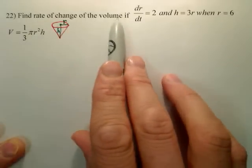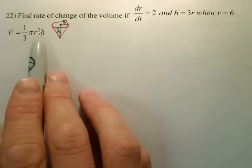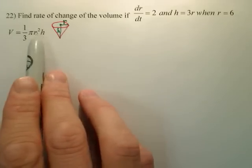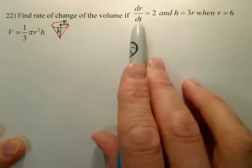This is another way of saying dV/dt. So I need to derive this, but before I derive this, I need to look at this and go, wait, when I derive this, I'm going to have a dr/dt and a dh/dt, and all I have is a dr/dt.